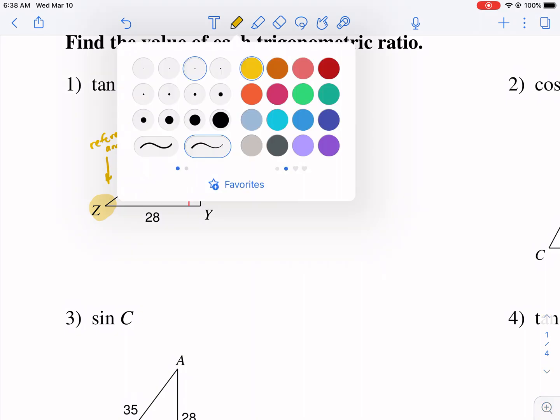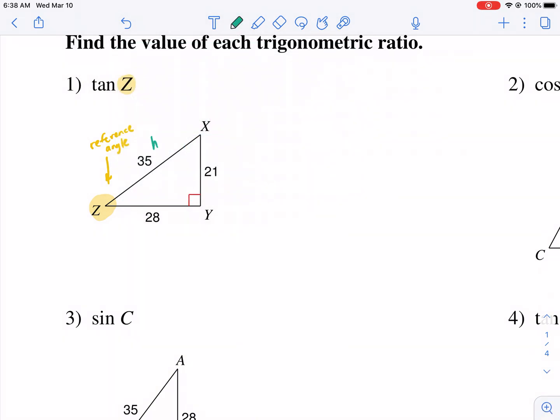Once you label your reference angle, the next step is labeling our sides. So we're going to have our hypotenuse. That's always opposite of the 90 degree angle. Then we have our opposite side. That's always opposite the reference angle. And then we have our adjacent. That's always forming the angle with the hypotenuse.